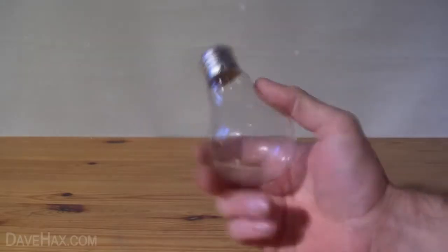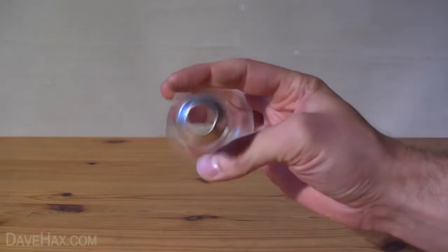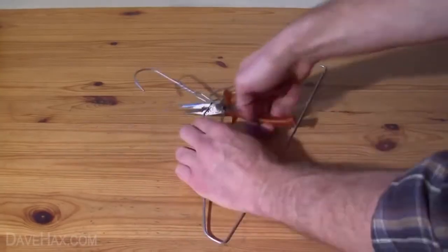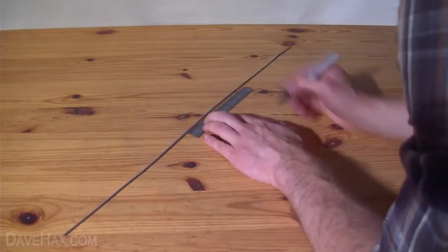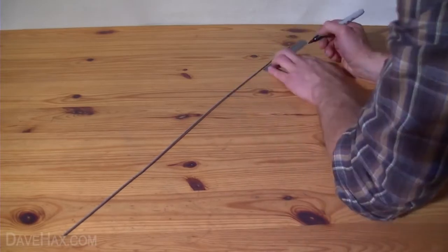We now have an empty glass bulb vase. To make the stand we're going to cut the hook off our wire coat hanger and straighten it out. Then we're going to cut it to a length of 60cm and mark it into 5 equal sections of 12cm.